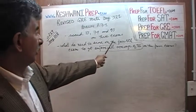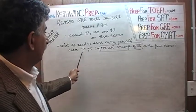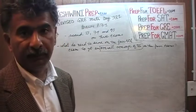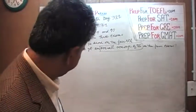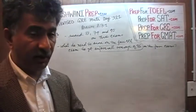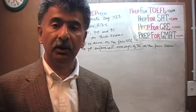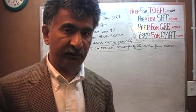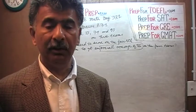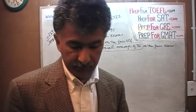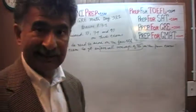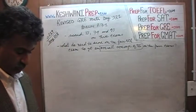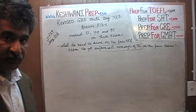What do we need to score on the 4th exam to get an overall average of 85 on the 4 exams? There are two ways you can go about it. This is not a complicated problem — it is very simple. You can do it the traditional, orthodox, classical, mathematical way, or we can do it in a quick and dirty way. If you are interested in the classical way, you can watch day 108.